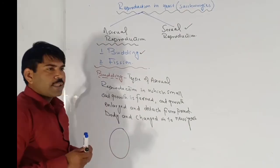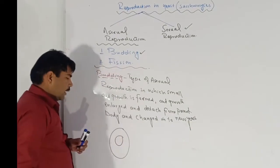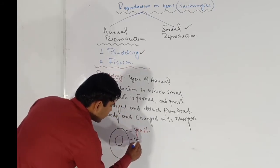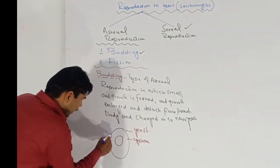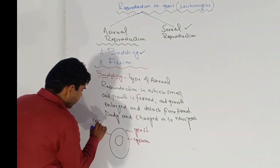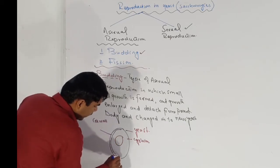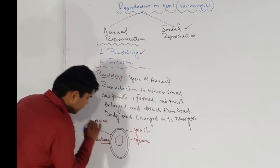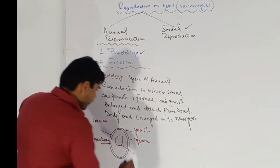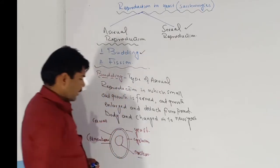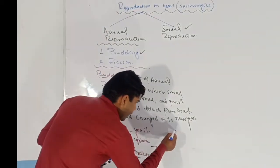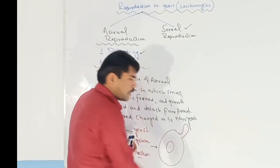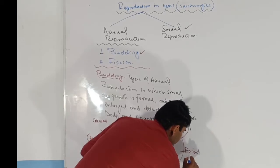For example, this is a yeast or Saccharomyces cell, and this is the nucleus. This is the cytoplasm of the cell because yeast is unicellular. This is the cell wall, and inside the cell wall is the cell membrane, and inside that is the nucleus. From this cell, a small outgrowth is produced.